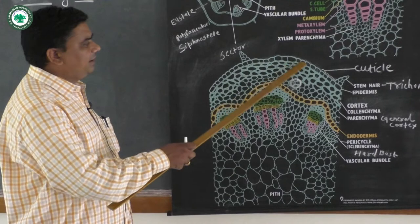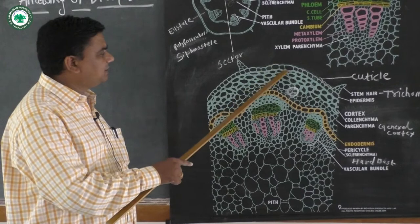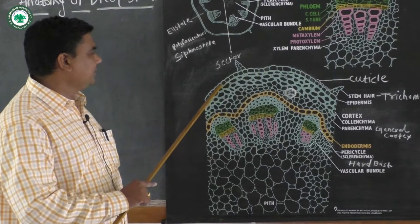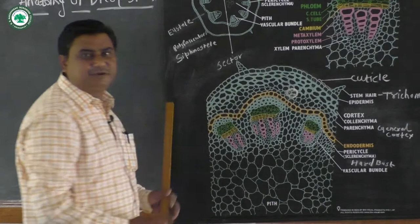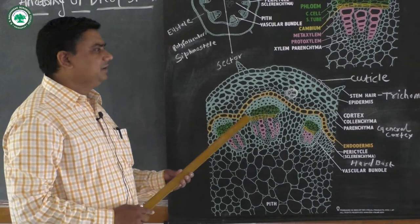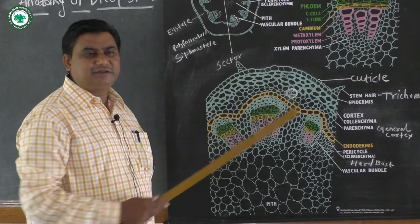The epidermis is made up from a single layer of elongated cells with no particular intercellular spaces. The cells are compactly arranged, and above the epidermis there is a thin-walled cuticle. The function of the cuticle is to check the rate of transpiration in the plant. In the young stem, which is green in color, there is also the occurrence of photosynthesis, and the thin-walled cuticle helps regulate that.